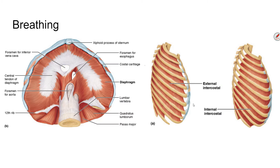When it comes to breathing, the major muscle is the diaphragm. There are two phases: inhaling and exhaling. During inhalation, the diaphragm and the external intercostals contract, causing the rib cage to enlarge and drawing air in. When those muscles relax, the diaphragm and the internal intercostals contract, causing you to exhale. So the diaphragm is involved in both phases — the external intercostals in inhalation and the internal intercostals in expiration.